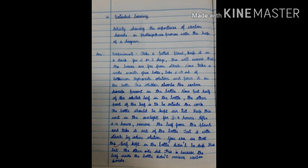Twelfth question. Extended learning. Activity showing the importance of carbon dioxide in photosynthesis process with the help of a diagram. Answer. Experiment. Take a potted plant. Keep it in a dark room for 3 days. This will ensure that the leaves are free from starch.